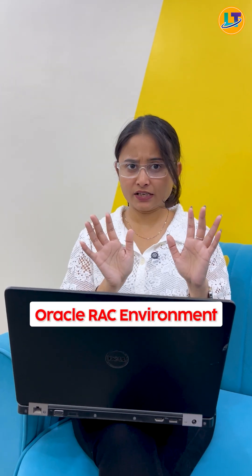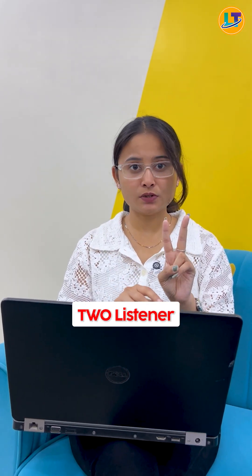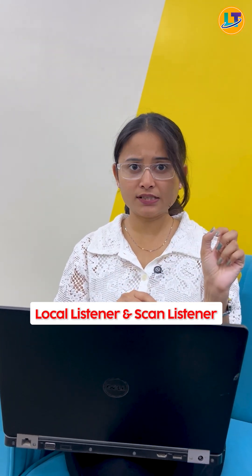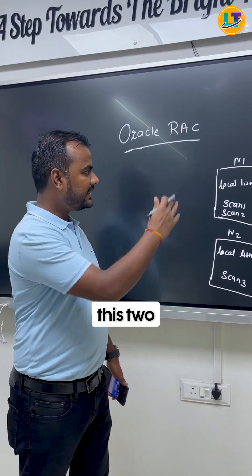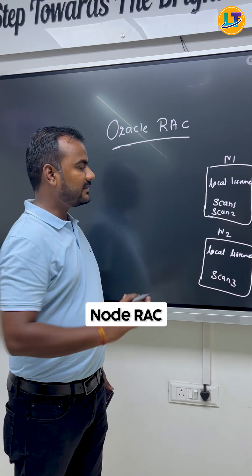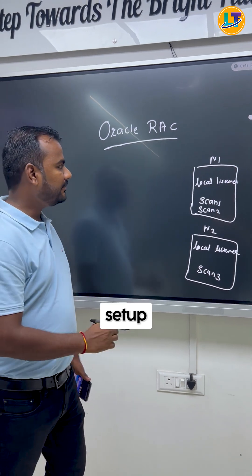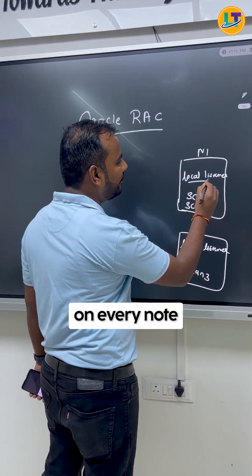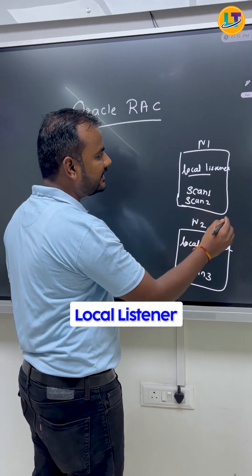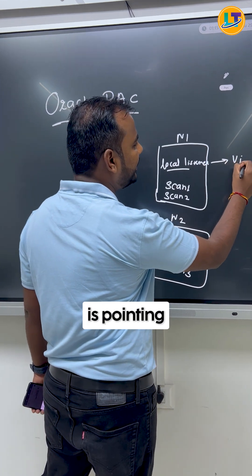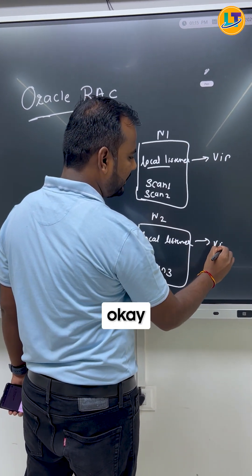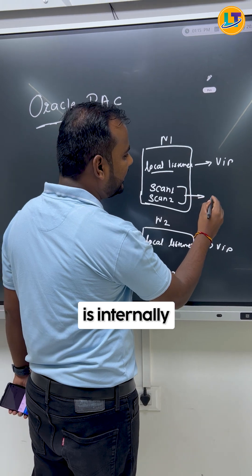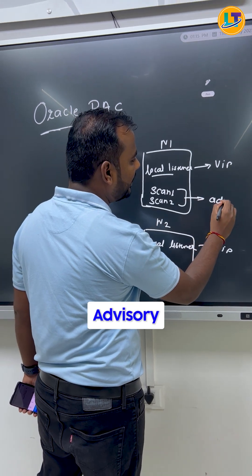Ankur sir, in the Oracle RAC environment I see two listeners — local listener and scan listener. Can you please explain the difference between these two? If you see this two-node RAC setup here, you can see on every node we have a local listener. The local listener is pointing to your VIP address, and this scan listener is internally using advisory.